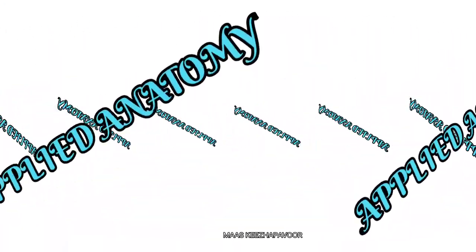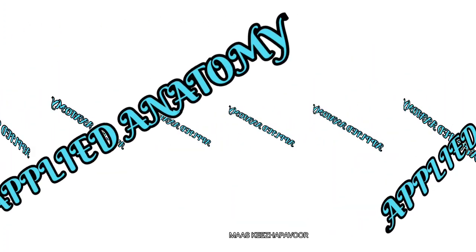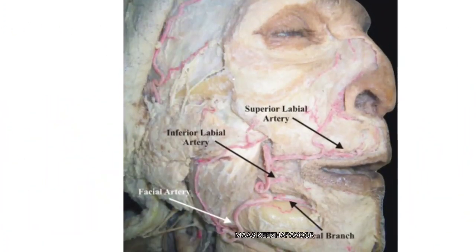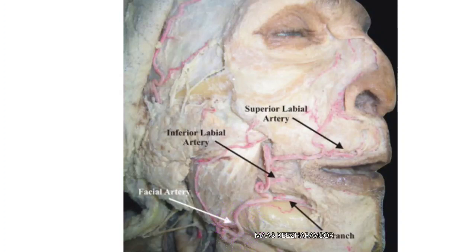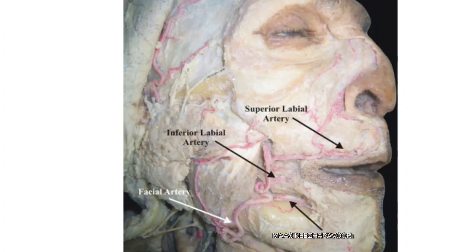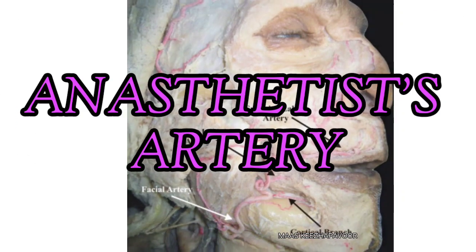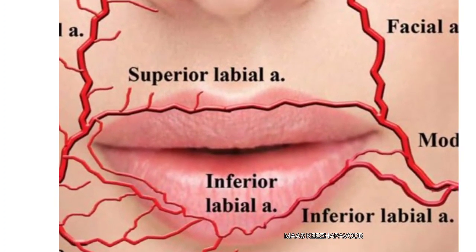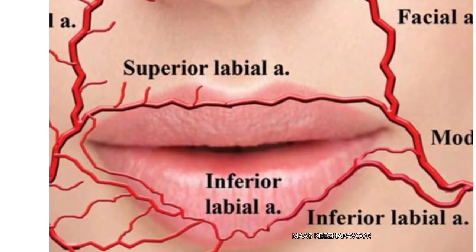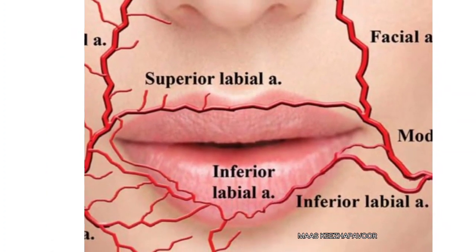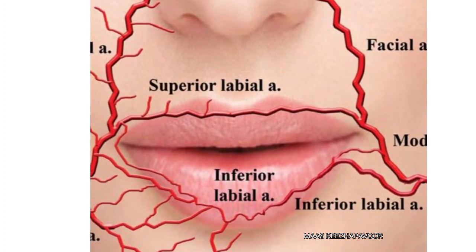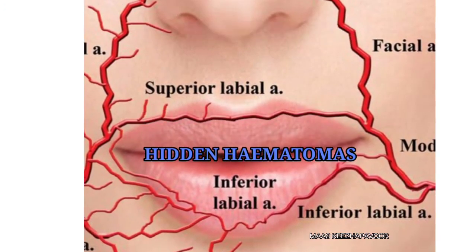During injury of the face, bleeding from the facial artery can be stopped by compressing the artery against the lower border of the mandible. The pulsation of the artery can be felt along the lower border of the mandible near the anteroinferior angle of the masseter — hence the artery is known as the anesthetist's artery. In the lips, branches of the facial artery are found nearer to the mucous membrane than to the skin; hence injuries caused by teeth on the mucous membrane of the mouth may develop hidden hematomas.